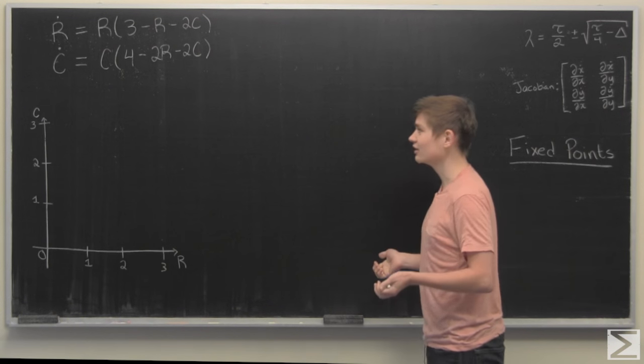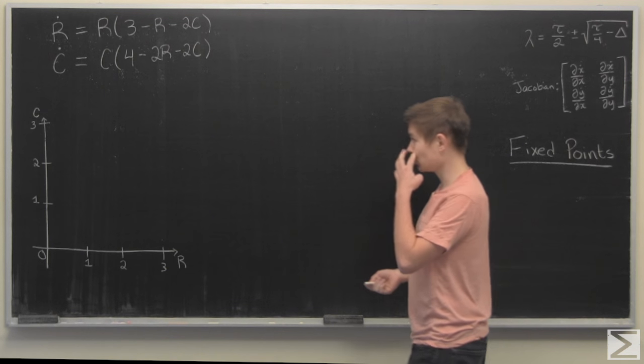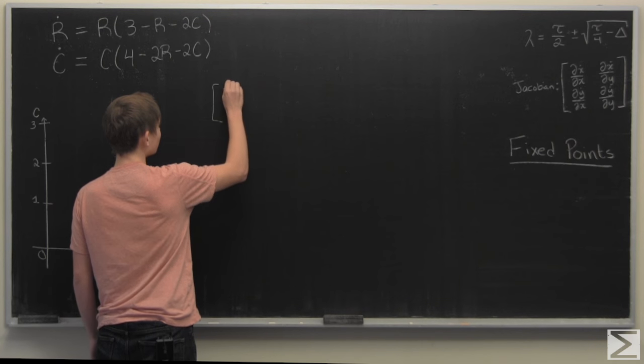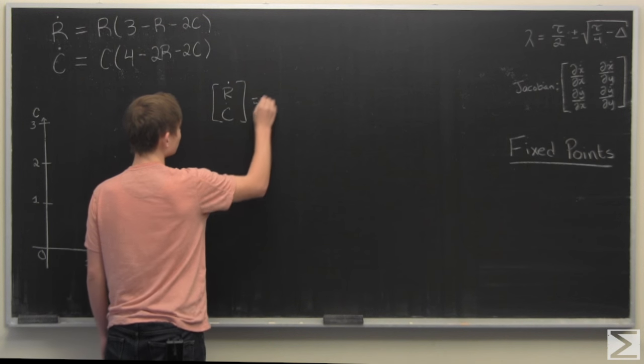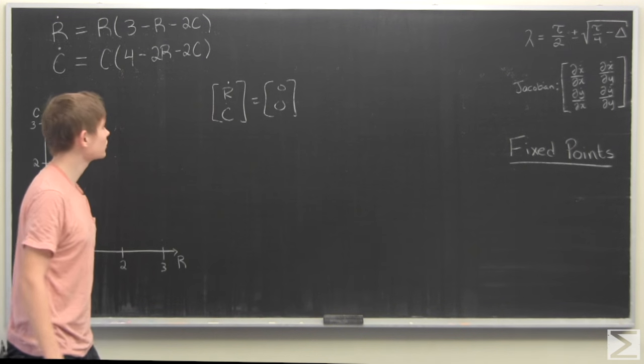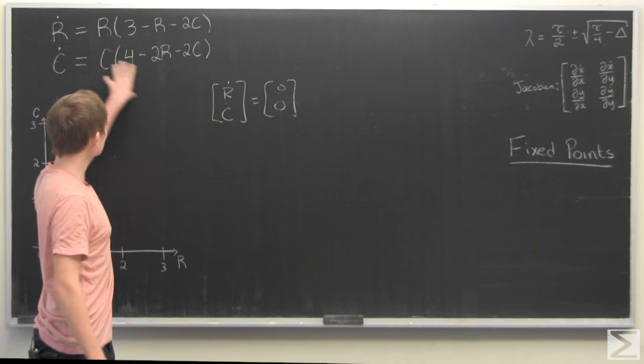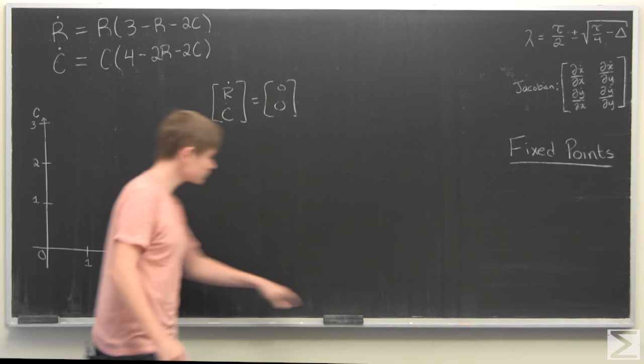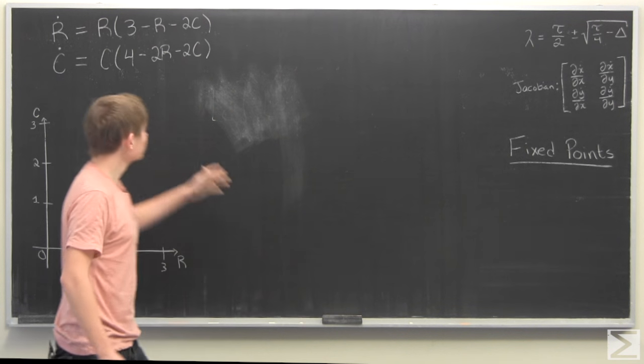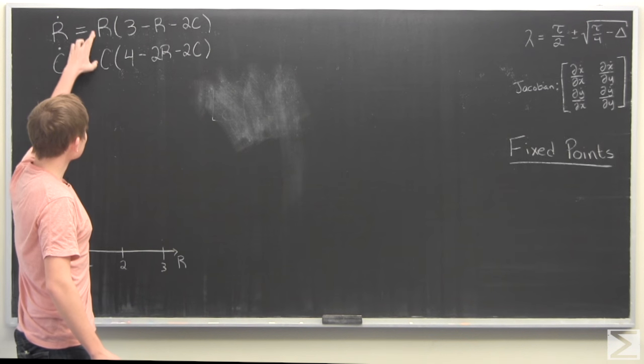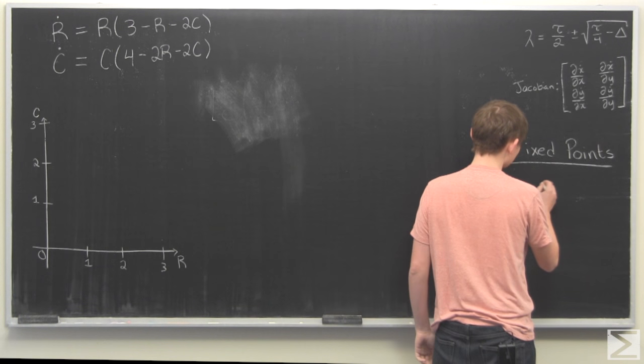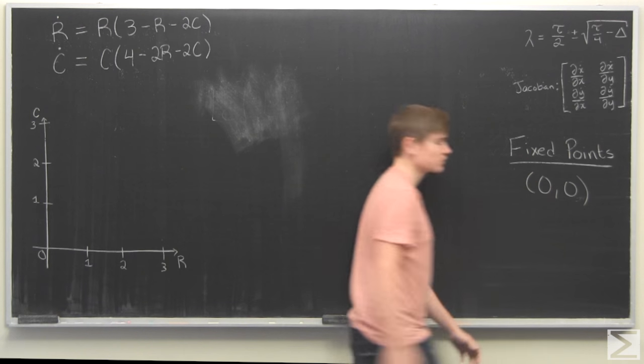So to begin we have to find the fixed points of the system, which occur when you have R dot and C dot both equal to 0. So you just need to find values of R and C such that both these equations equal 0. Starting off you have the trivial fixed point of 0, 0, which is just when you don't have any cows or rabbits there's going to be no growth. So that's our first fixed point.